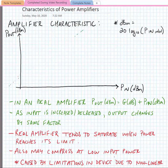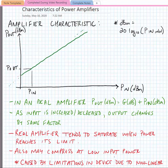As we start to look at power amplifiers, let's look at the characteristic of a power amplifier. The ideal characteristic would be a linear characteristic. At any given power level at the input, P_in, we would measure some P_out at the output. Ideally, as we increase the input power, the output power would follow linearly, proportionally by some gain factor — and this would be the power gain.